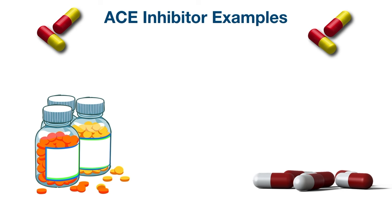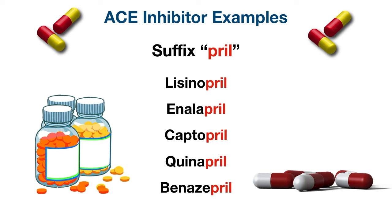Let's look at some example ACE inhibitors. The easy way to remember them is that most end in '-pril.' Some examples include lisinopril, enalapril, captopril, quinapril, and benazepril.